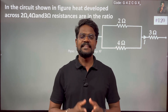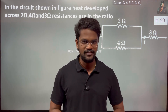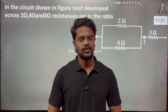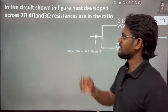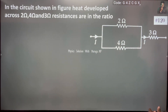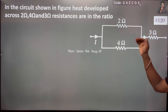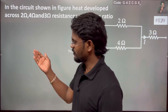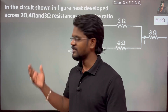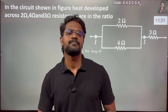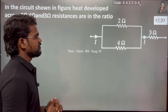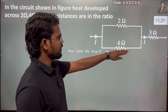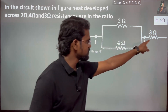Hi everyone. In the circuit shown in the figure, heat developed across 2Ω, 4Ω, and 3Ω resistances are in the ratio — so that's the question. In this circuit, one current flows through it. We have been given a circuit where 2Ω and 4Ω are in parallel, and that combination is in series with the 3Ω resistor.